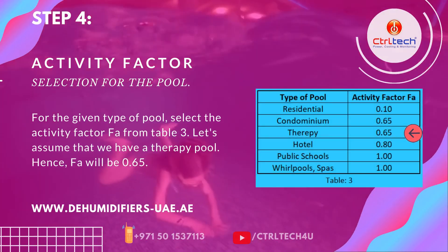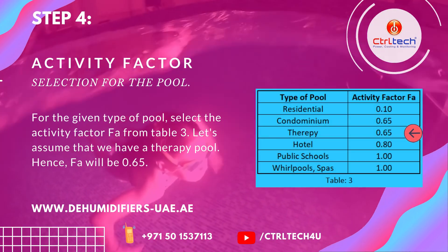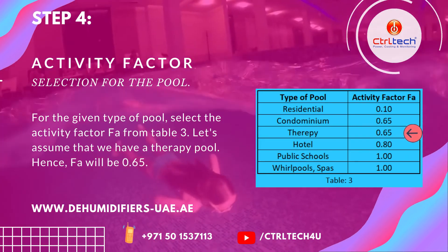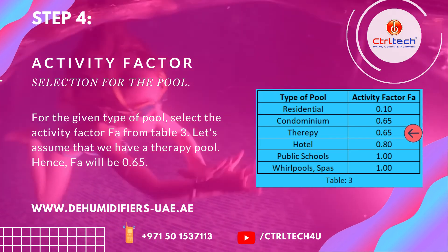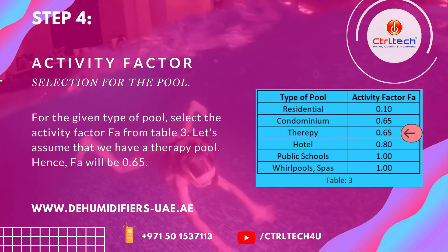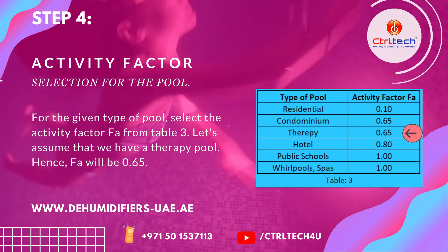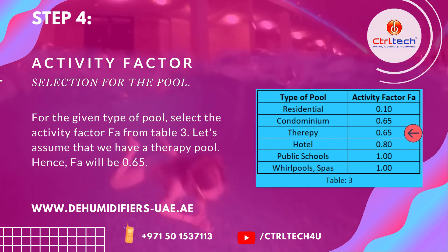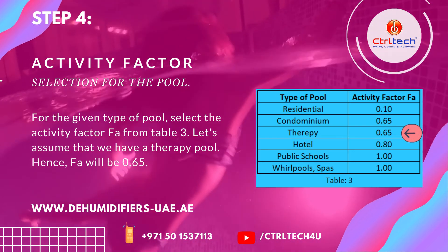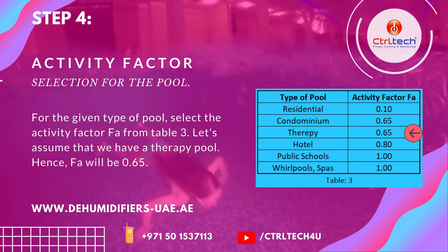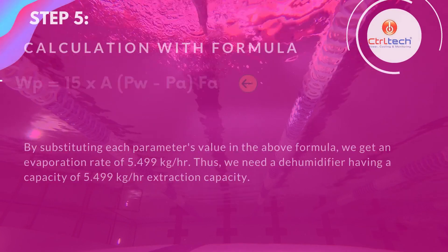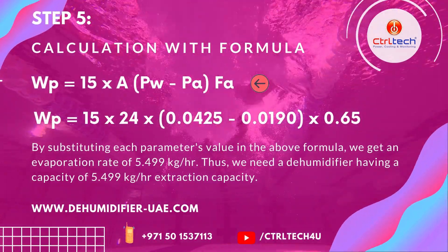The evaporation rate also depends on the number of people using the swimming pool and hours of usage. For example, the evaporation rate will be more for a public pool which is always occupied than a private pool. This phenomenon is factored into the dehumidification load calculation formula with the help of the activity factor. For the given type of pool, select the activity factor FA from Table 3. Let's assume that we have a therapy pool, hence FA will be 0.6.